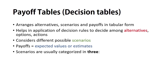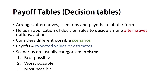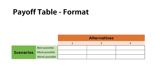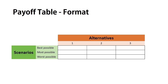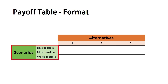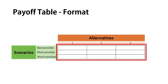Scenarios are usually divided into three categories: best possible, worst possible, or most likely possible scenarios. Alternatives usually take up the columns and are arranged from top to bottom, whereas scenarios usually take up the rows and are arranged from left to right. The cells linking both alternatives and scenarios contain expected values or payoffs. These payoffs can be profits, returns, cost, revenues, or any figure necessary for the decision-making process.